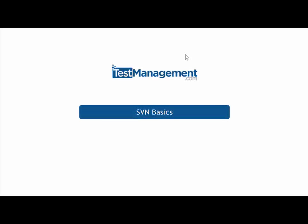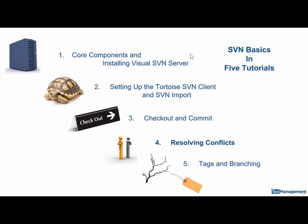In our fourth tutorial on SVN Basics we're covering conflicts. We've already looked at the core components and installing the server, we've spent time working with Tortoise SVN Client and doing the imports, and we've completed tutorial 3 where we've done checkouts and the commit process. What we're looking at now is the concept of resolving conflicts when two people are modifying the same file or same set of files at the same time.